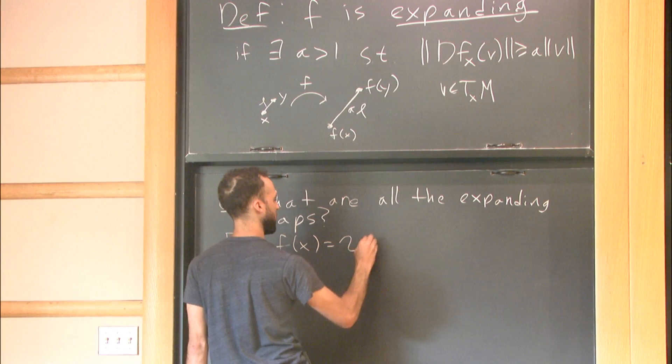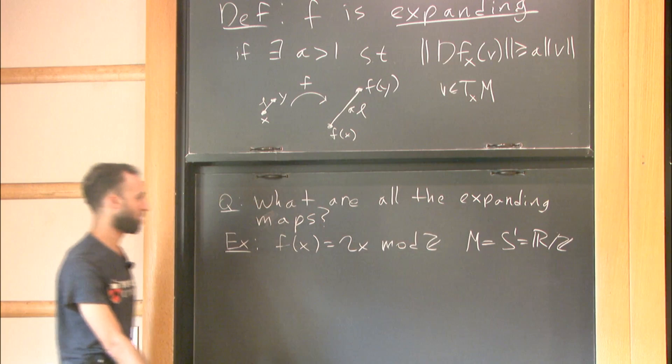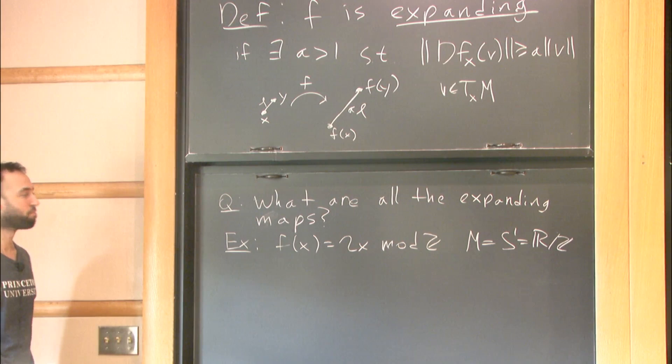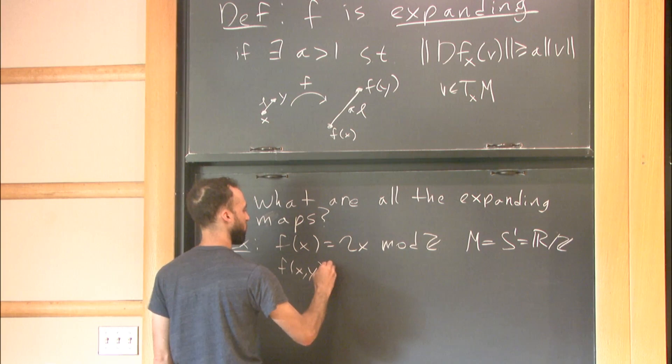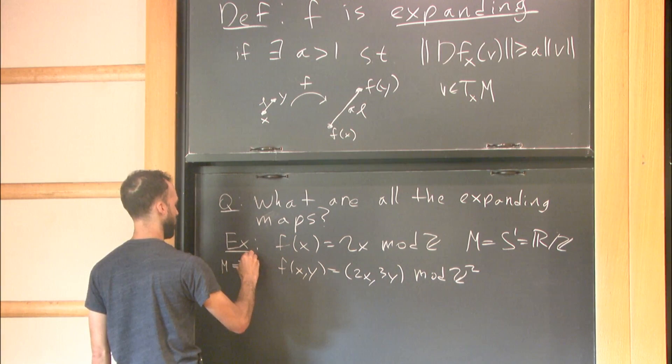So here's an example. I could do x equals 2x mod ℤ, where I have the circle. So I can take the circle and double it over itself. This will expand everything with a factor of 2. I could do, say, if xy equals 2x 3y mod ℤ squared.